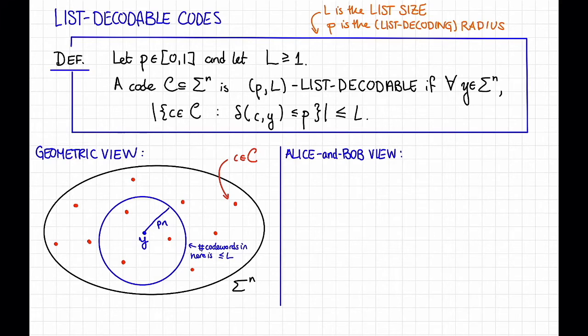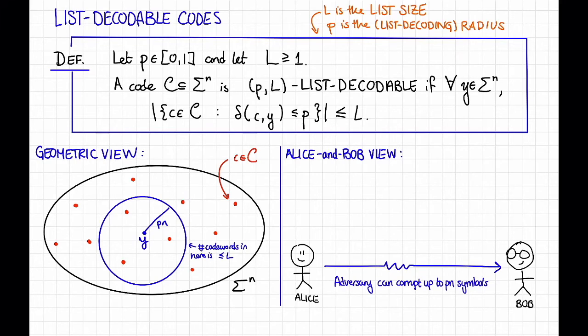We also have an Alice and Bob view of the situation. Here we have a sender Alice and a receiver Bob. And as usual, there's some noisy channel between them. This is going to be an adversarial channel that can corrupt up to a P fraction of the symbols. As usual, Alice has a message X that she's going to encode into a code word C, which she's going to send to Bob. And what Bob receives is a corrupted code word. Let's call that Y. And from this corrupted code word, well, before Bob was supposed to be able to figure out exactly what Alice meant to say. In list decoding, Bob is supposed to figure out a short list with the guarantee that what Alice had to say was in the list.